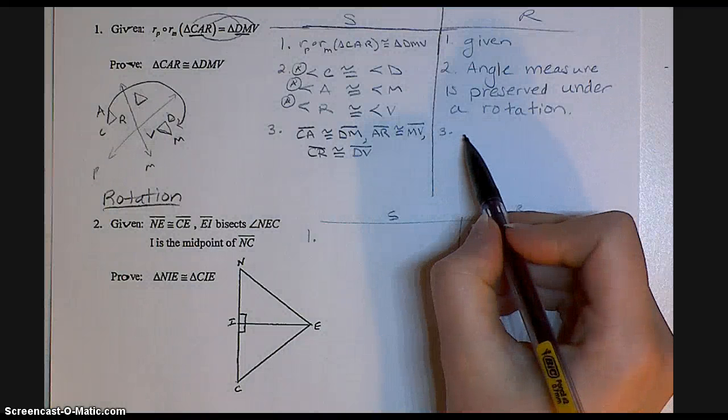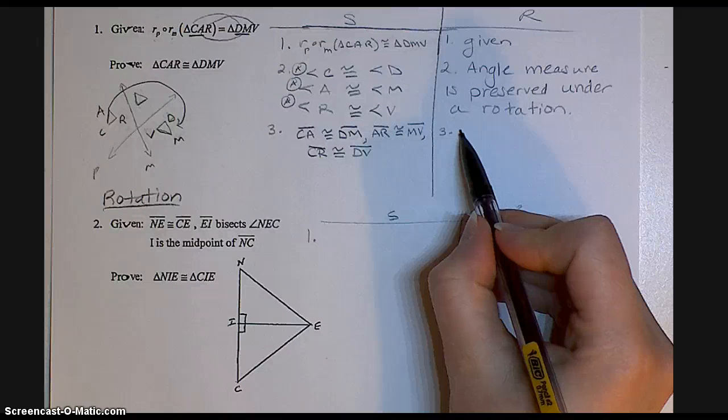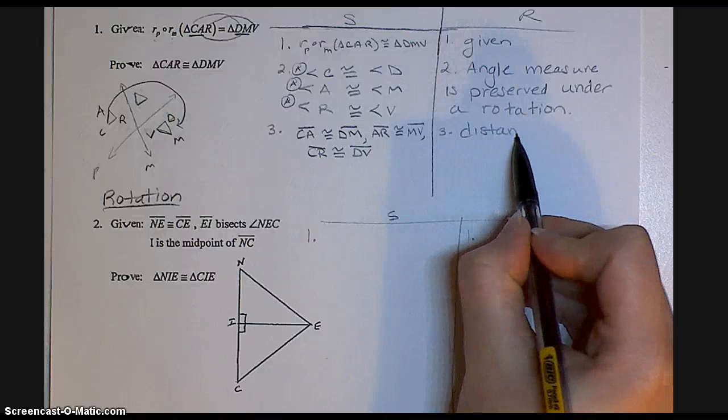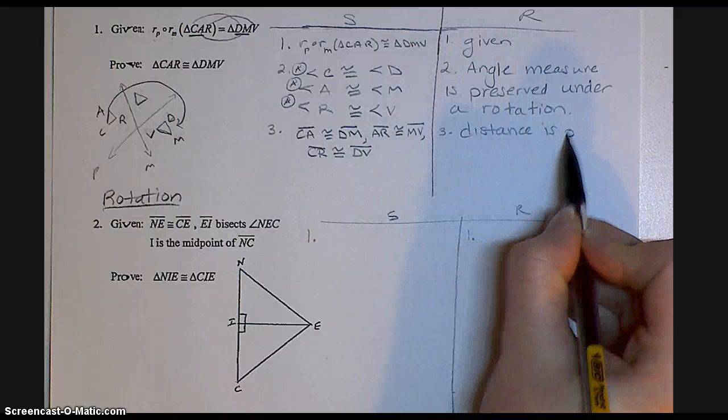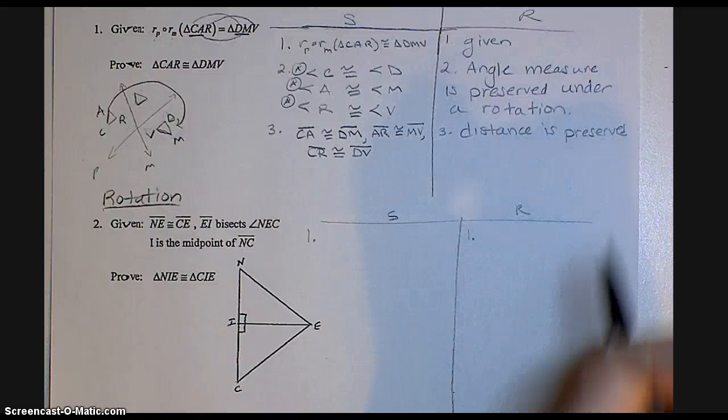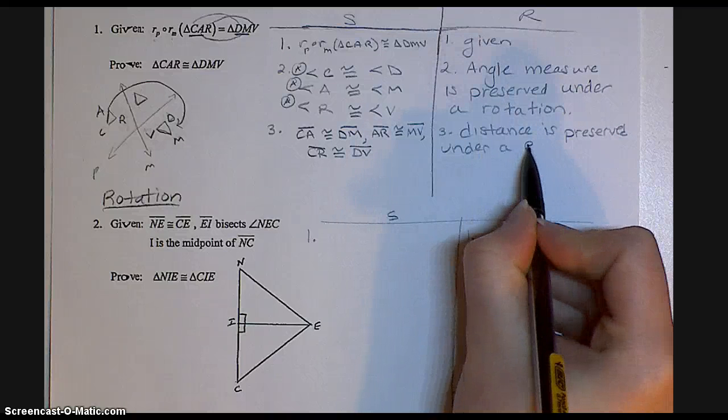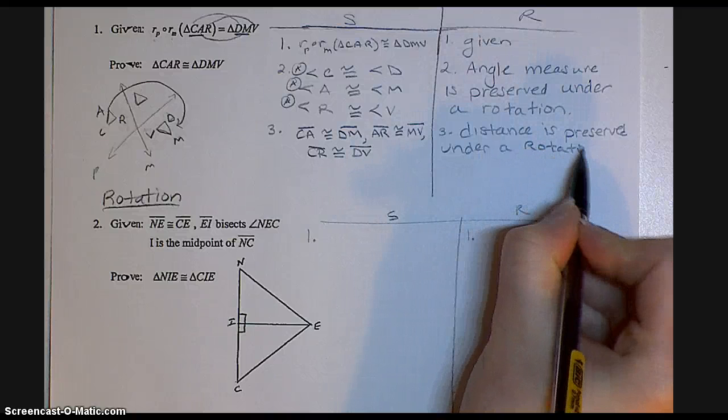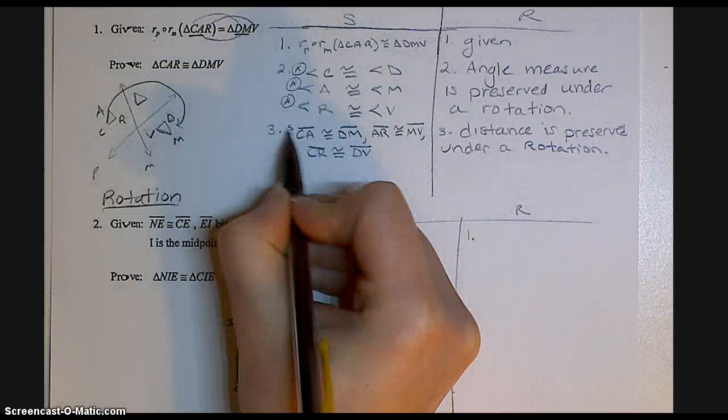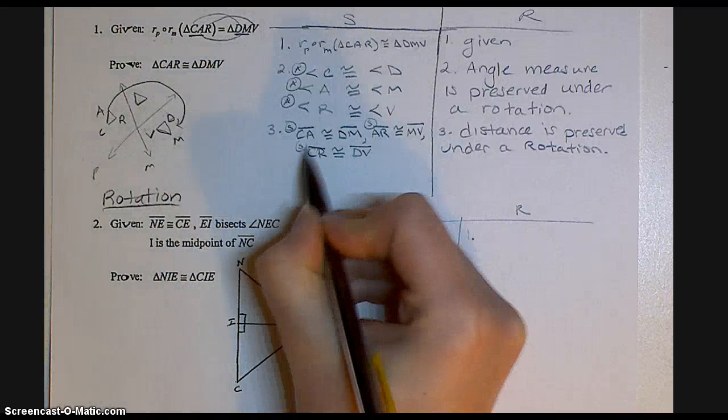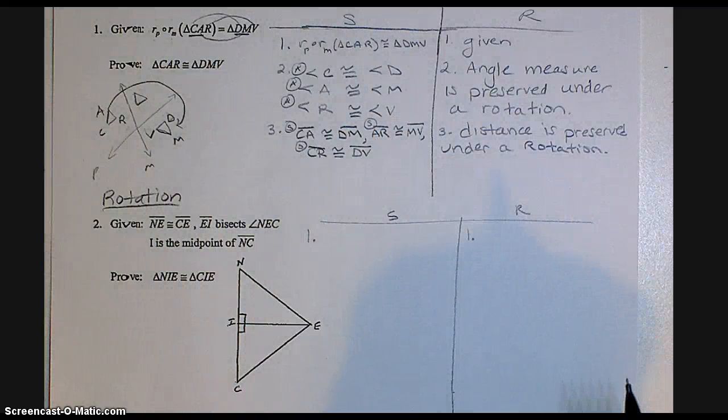And the reason why those three sides are congruent is because distance is preserved under a rotation. So now I've shown that all three sides are indeed congruent.